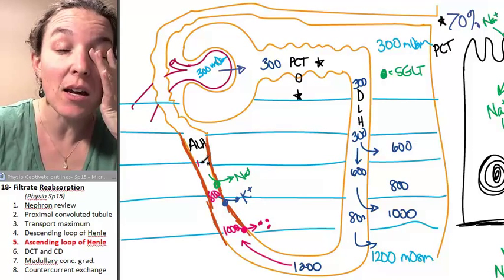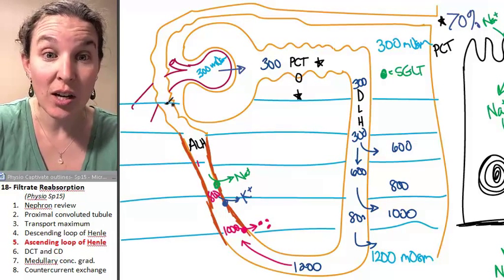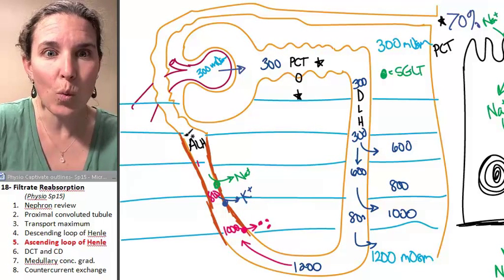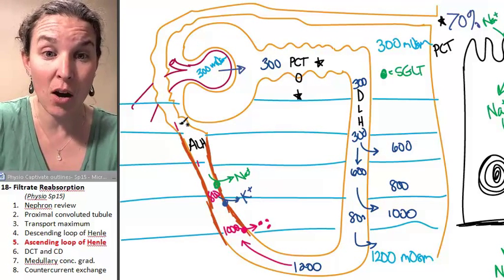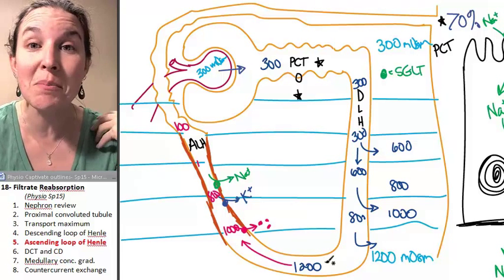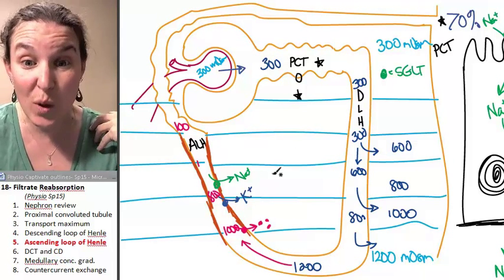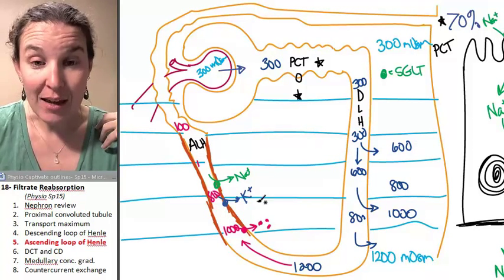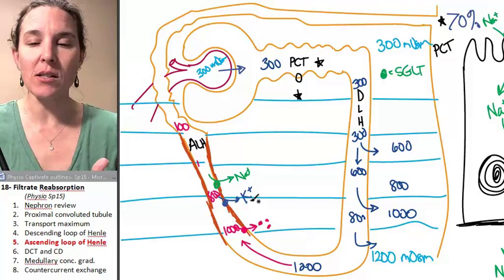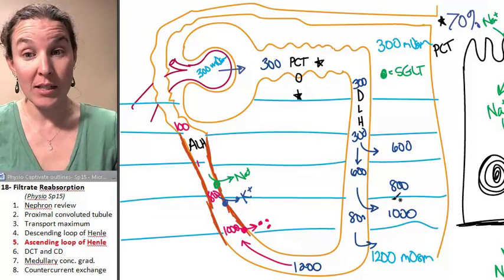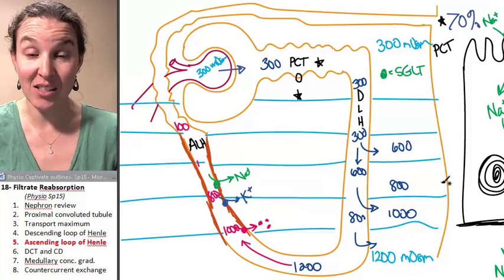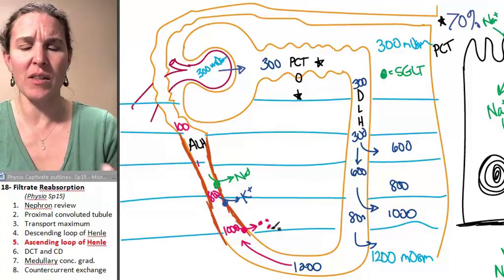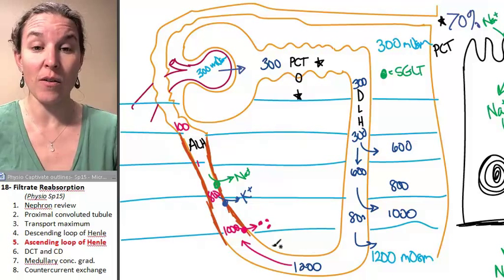In fact, by the time we reach the distal convoluted tubule, we can have a concentration all the way down to 100 milliosmoles because we actively pumped solutes out. We pumped so many solutes out that's one of the reasons we can maintain this concentration gradient - the solutes keep getting actively pumped out of the filtrate.